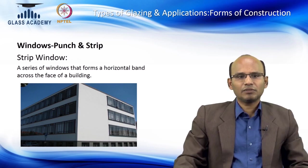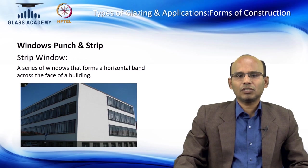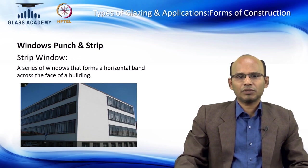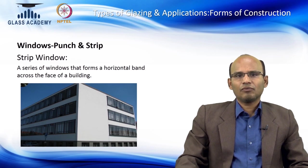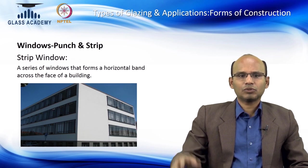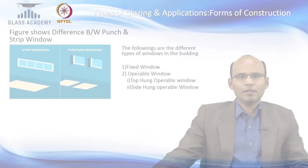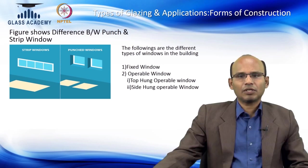What we call a strip window is a large continuous ribbon-type window, rather than square or rectangular individual windows. In this application the construction design is slightly different — it has a continuous frame at the top and bottom to support the glass, with some vertical intermediate members in between. This design is slightly different from the typical individual window concept.